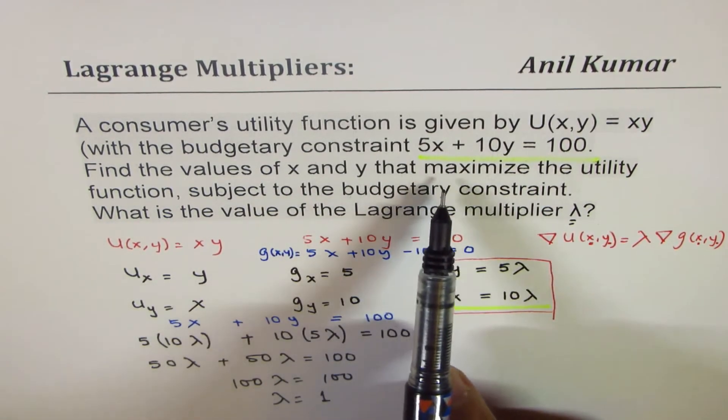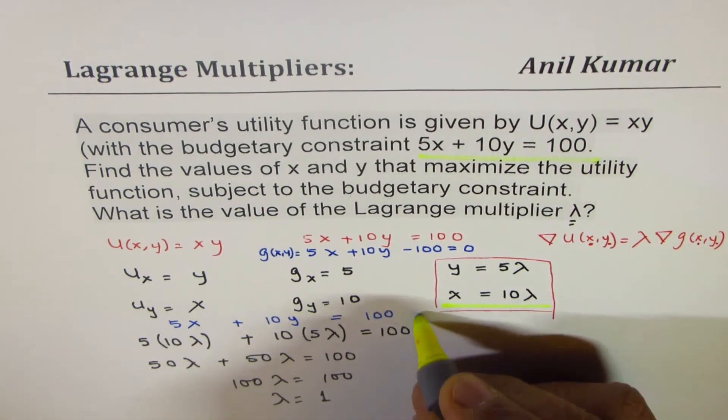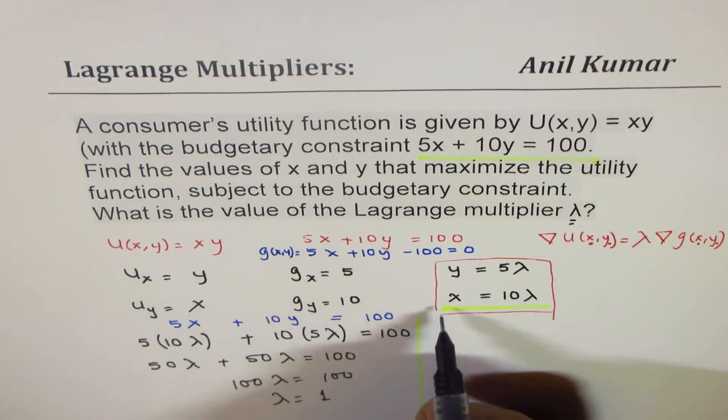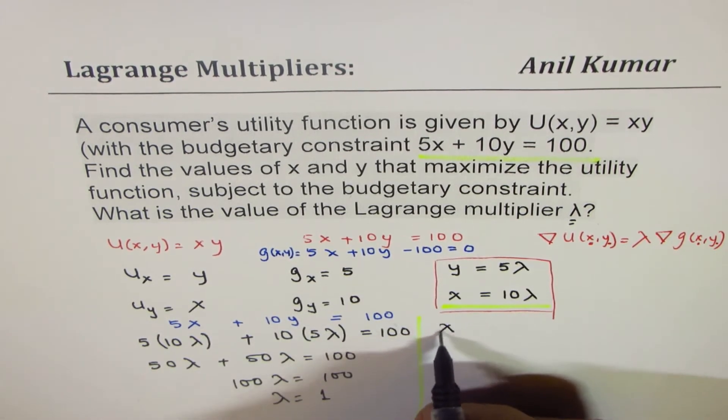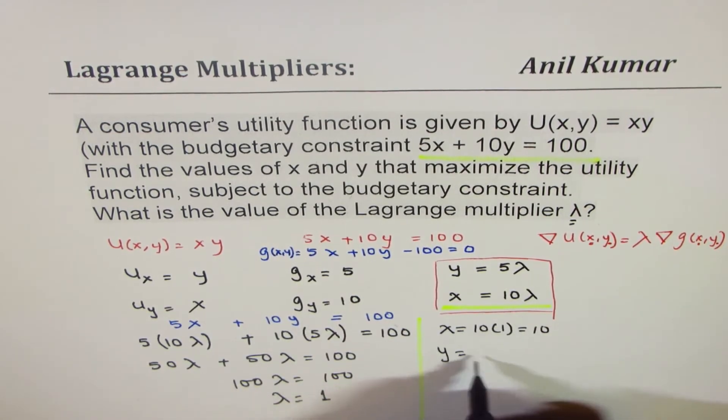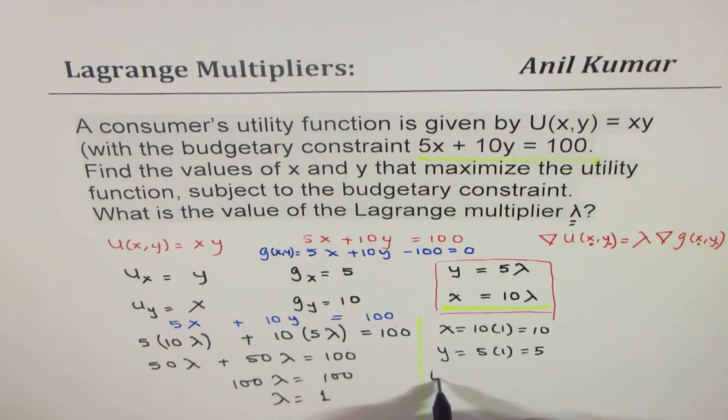Now, find the values of x and y that maximize the utility, so we can easily find the values of x and y. x is equal to 10 times 1, which is 10, and y is equals to 5 times 1, which is 5.